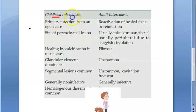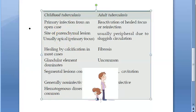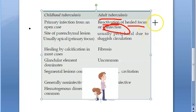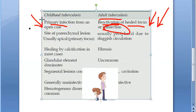We are concerned about childhood tuberculosis here because we are looking at paediatrics. The primary infection in a child is from an open case. In adults, tuberculosis is a reactivation of a healed focus or reinfection — a dual strike kind of thing. Here in children, it is primary — the first infection for the child.